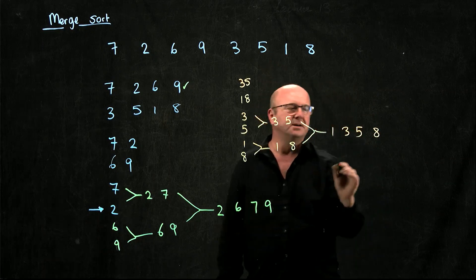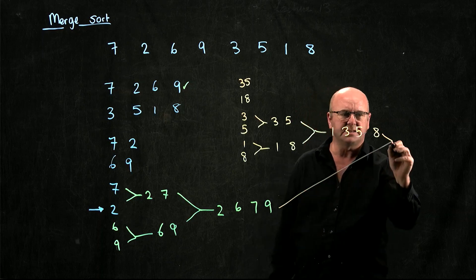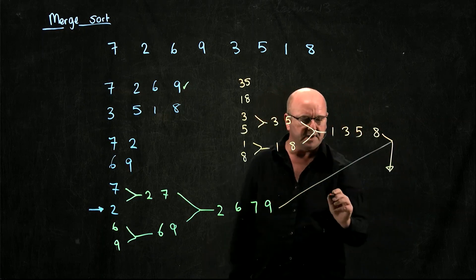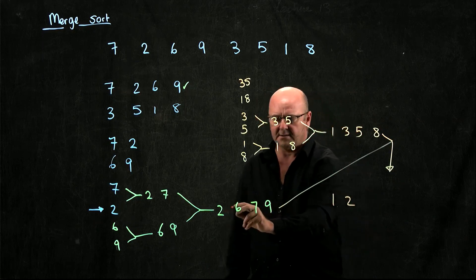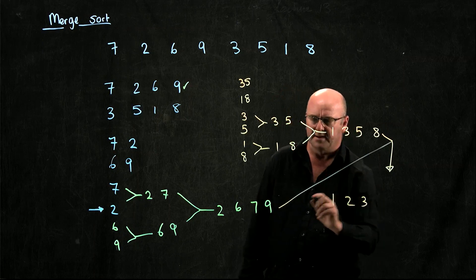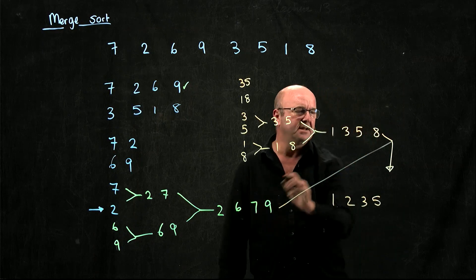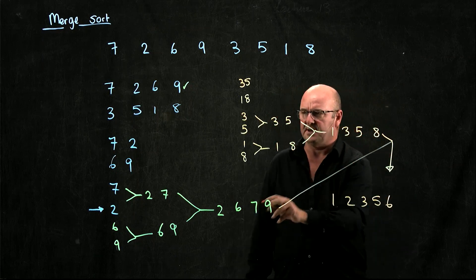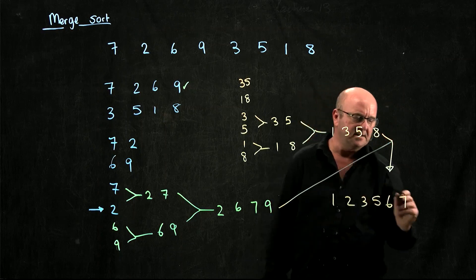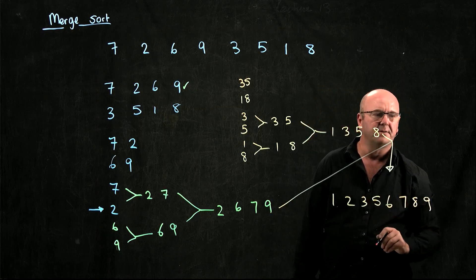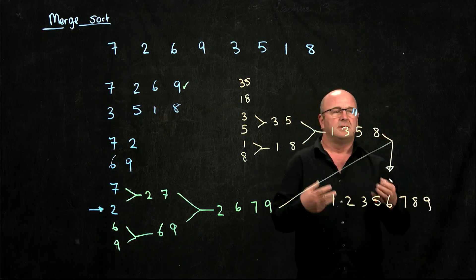Now to sort my original list, all I have to do is join these two pieces. I compare the two and the one, I compare the two and the three, I compare the six and the three, I compare the six and the five, I compare the six and the eight, I compare the seven and the eight, I compare the eight and the nine — and I'm done with the nine. And I've sorted my list.